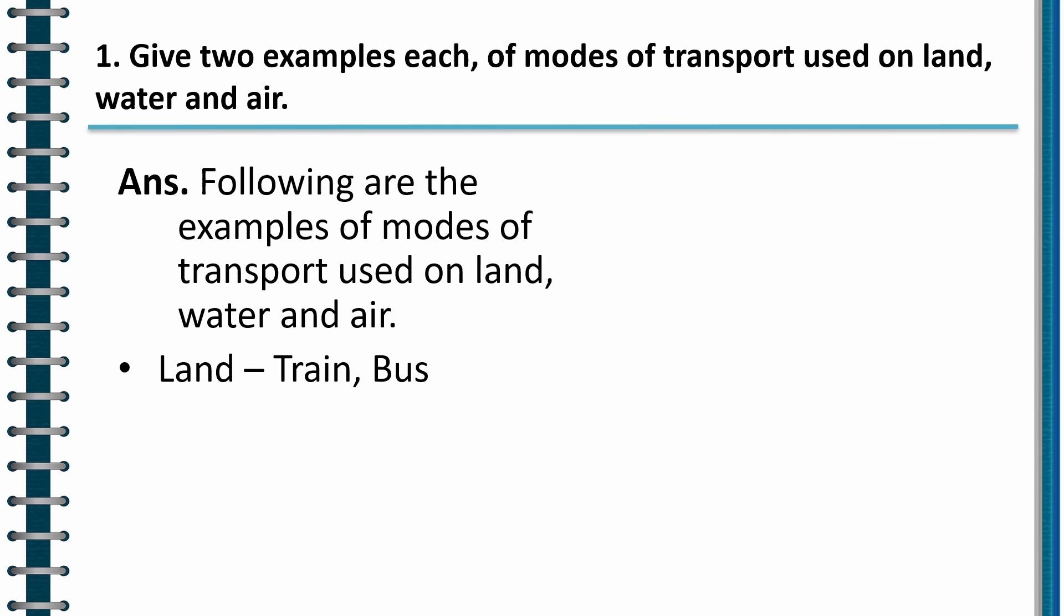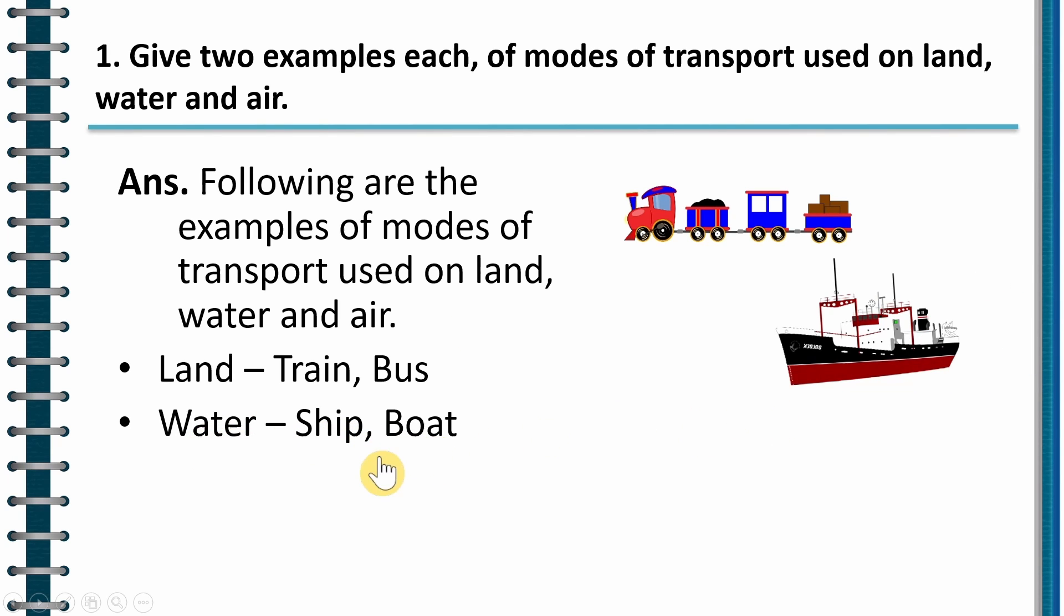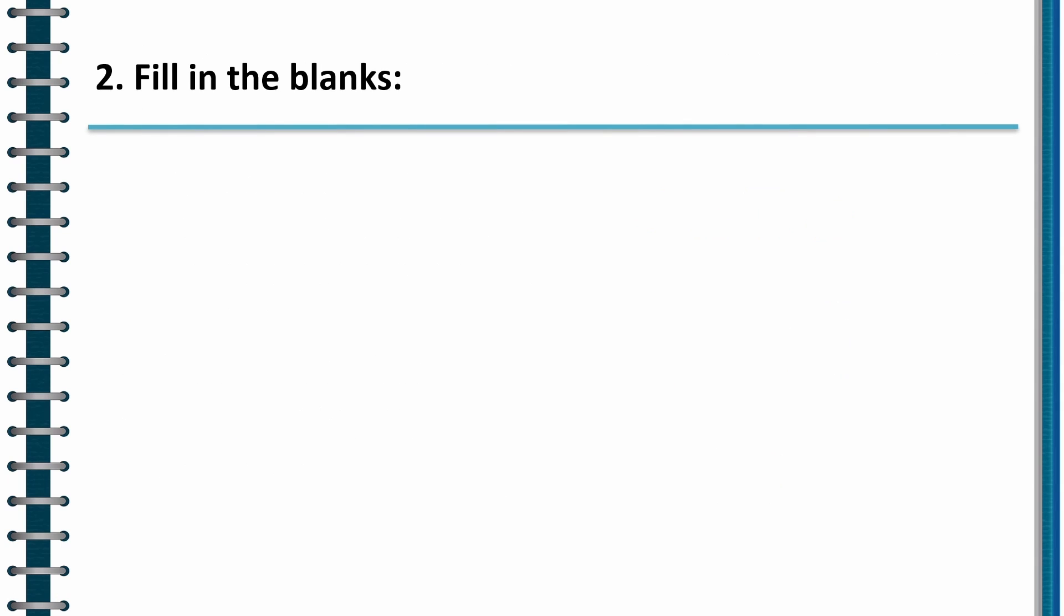On land we use train, bus. As you can see from the image, this is an example of a train. And then on water we use ship, boat. So this is a ship. And in air we use helicopter, aeroplane. This is the image of helicopter. So these are the different modes of transport used on land, water and air.